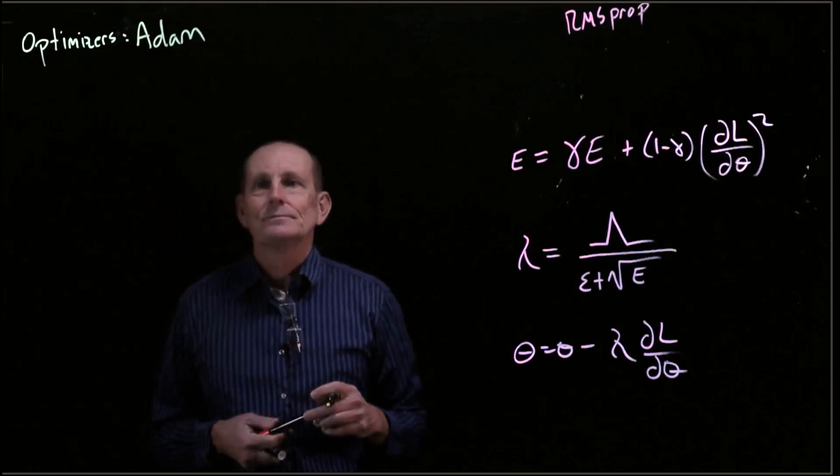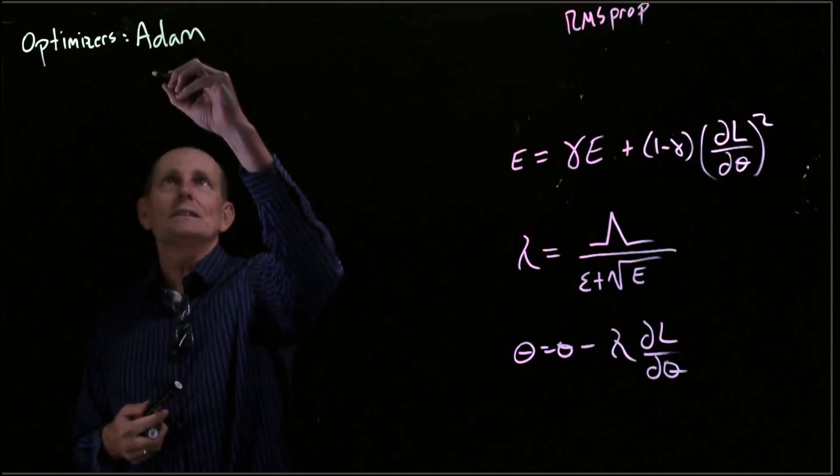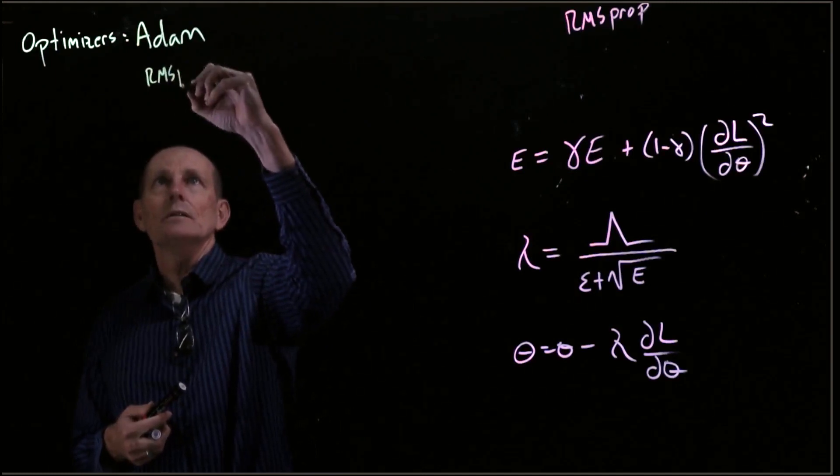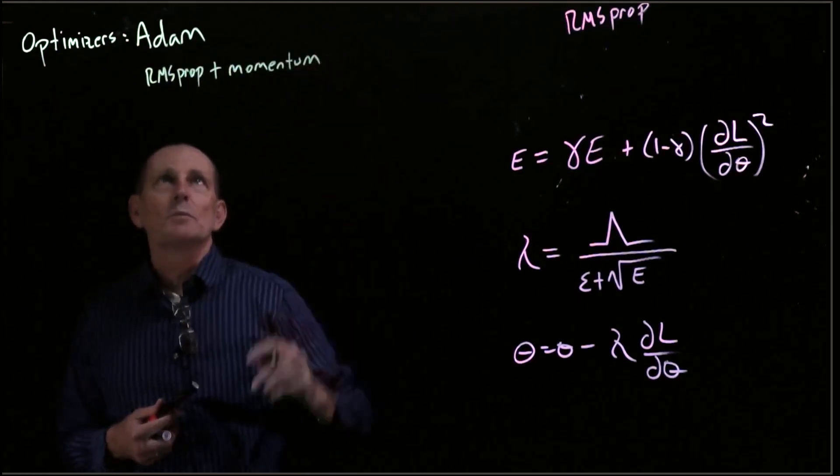Adam is another type of optimizer. The way I think of Adam is basically it's RMS prop plus momentum.